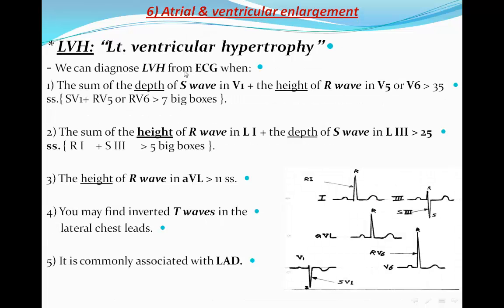Left ventricular hypertrophy (LVH): we can diagnose LVH from the ECG when the sum of the S wave in V1 plus the R wave in V5 or V6 is more than 35 small squares (or 7 big boxes). A second parameter is the sum of the R wave in lead 1 plus the S wave in lead 3 — if it is more than 25 small squares (5 big boxes), there is LVH. Alternatively, the height of the R wave in aVL more than 11 small squares also indicates LVH.